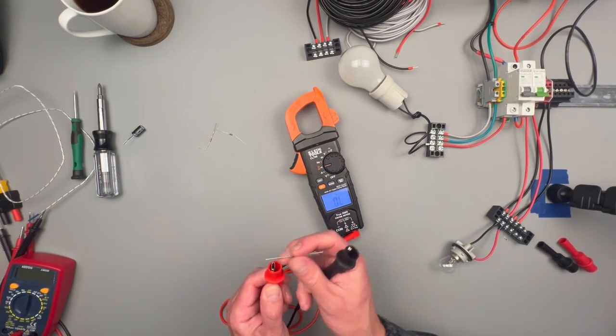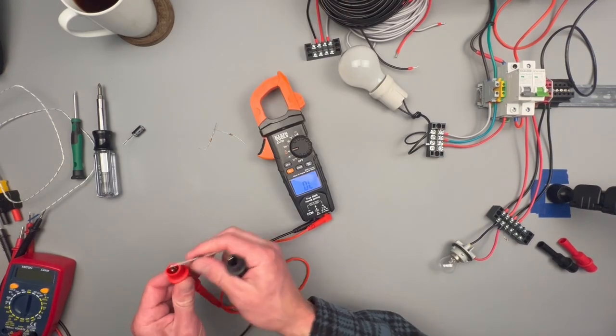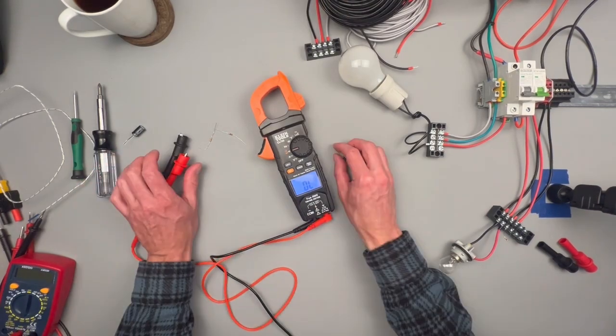You can check in the other direction. It should show an OL. Basically saying open loop or out of range. It is a nice backlight on this meter, I have to say.